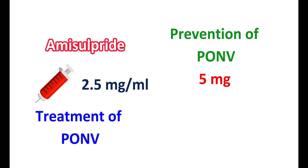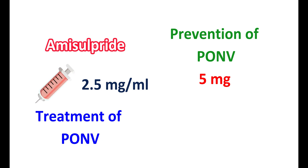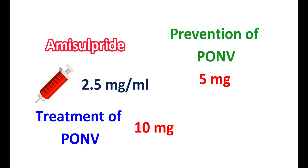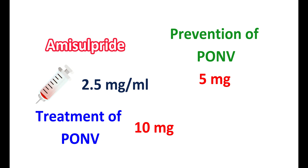For treatment of post-operative nausea and vomiting in patients who did not receive amisulpride for prophylaxis, a dose of 10 mg as a single IV dose is used. In this way, amisulpride is useful in controlling nausea and vomiting by blocking dopamine receptors located on the CTZ.